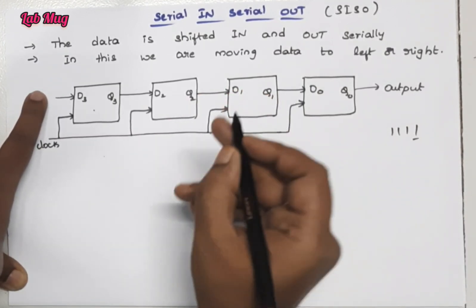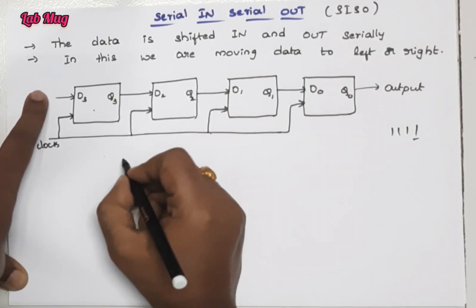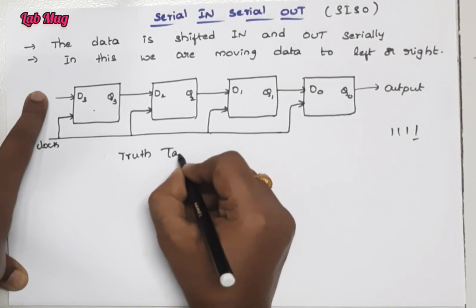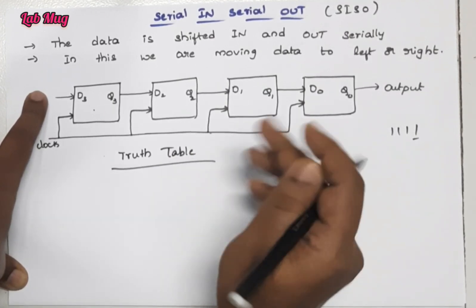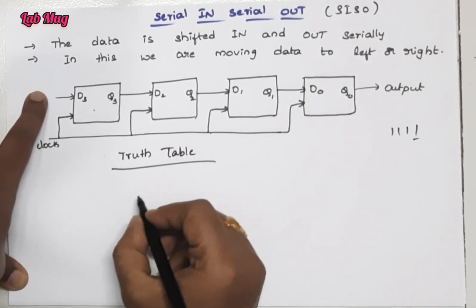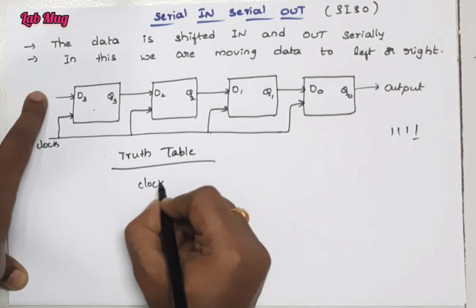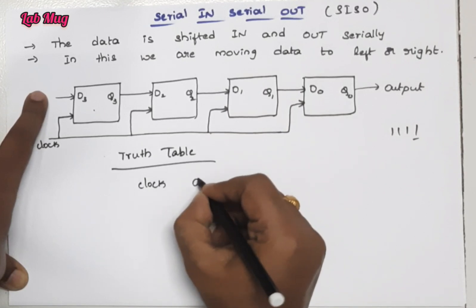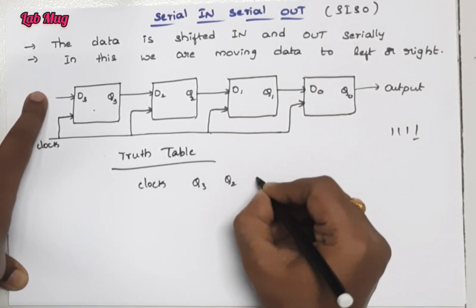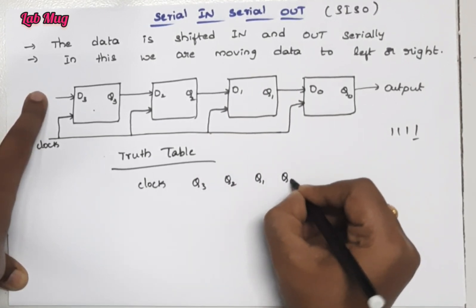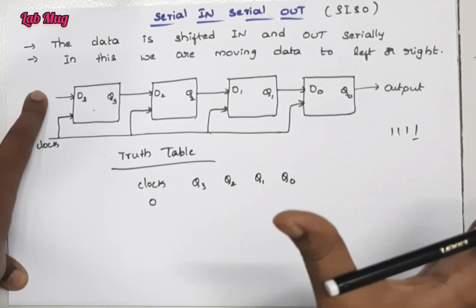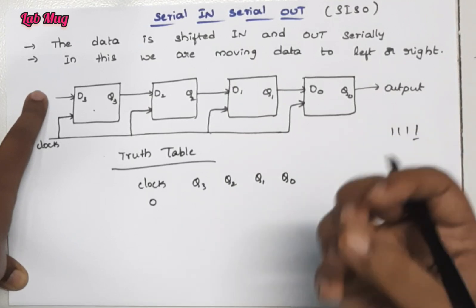For each shift register, the truth table is compulsory to explain along with the diagram. That is the truth table for this flip-flop. First of all, clock and the outputs Q3, Q2, Q1, and Q0.